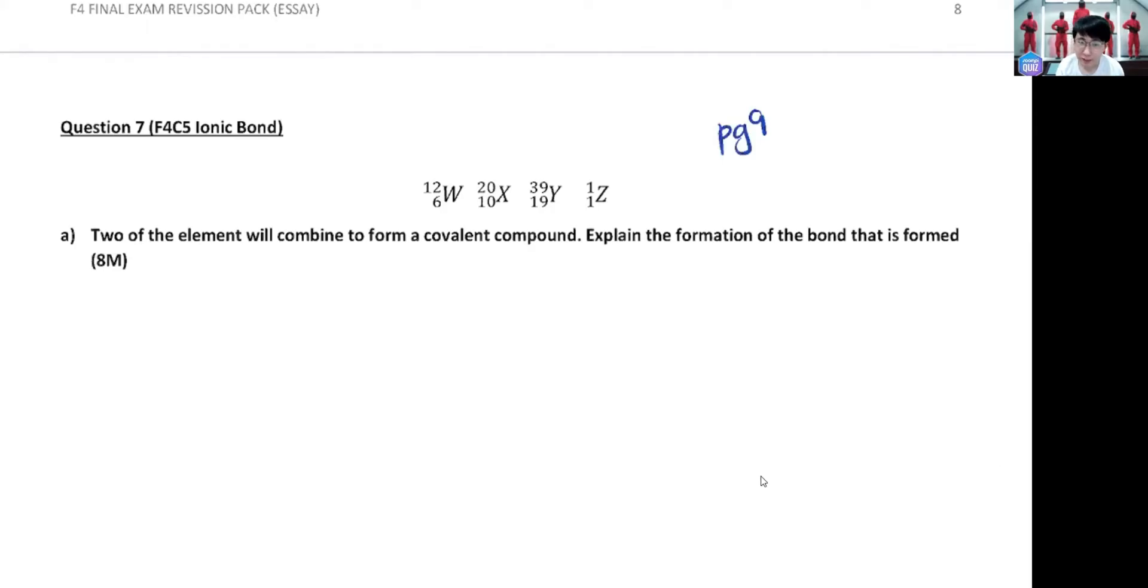Okay, so I have four elements here. They say two of these elements will combine to form a covalent compound. Explain the formation of the bond that is formed in this case. So guys, how do you form a covalent compound?